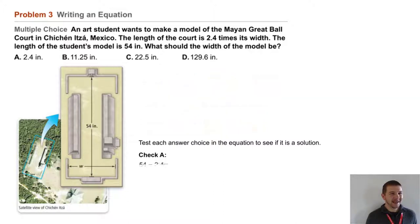So we can check option A by substituting 2.4 into the equation 54 = 2.4 × W. So our question: does 54 equal 2.4 times 2.4? No, 54 does not equal 5.76.